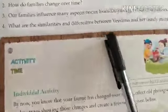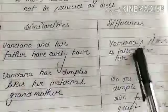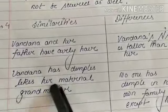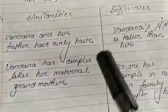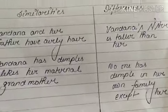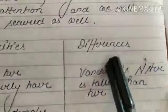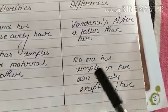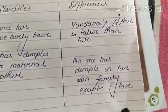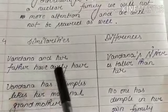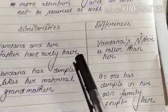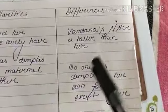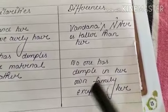Question number 4: What are the similarities and differences between Vandana and her family? Similarities: Vandana and her father both have curly hair. Vandana has dimples like her maternal grandmother. Differences: Vandana's sister is taller than her. No one else in her immediate family has dimples except Vandana.